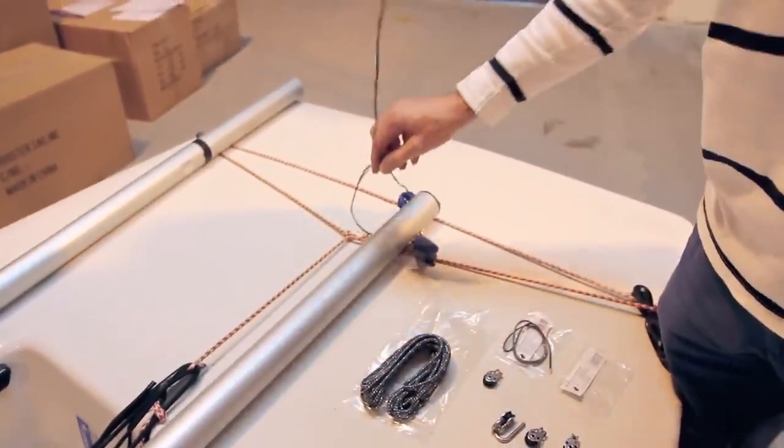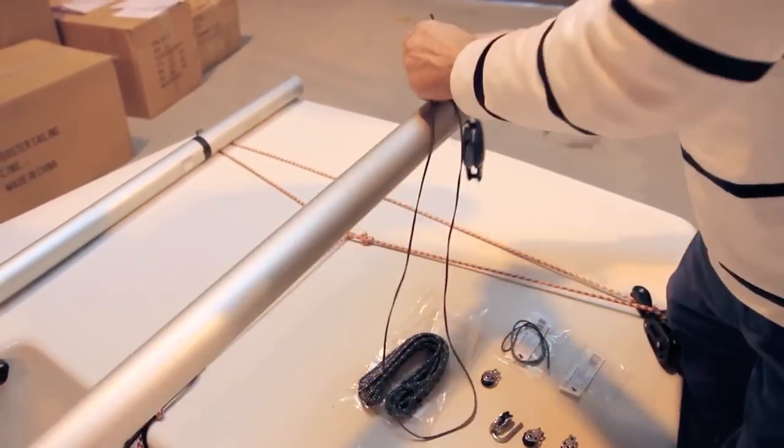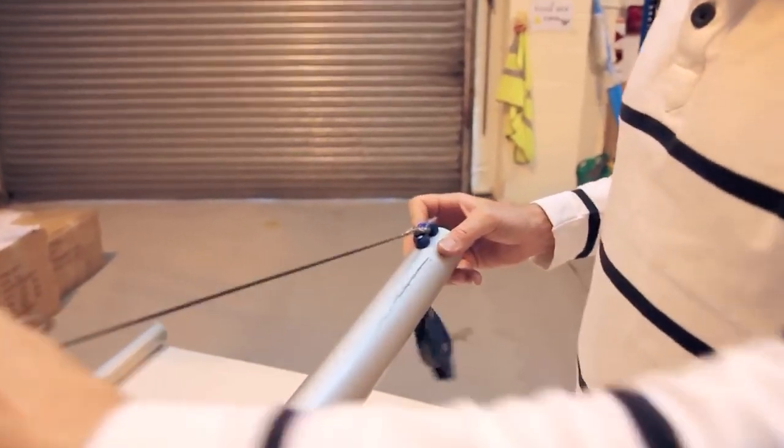So a simple loop on a loop to attach that to the outside of the boom. That's your primary line.